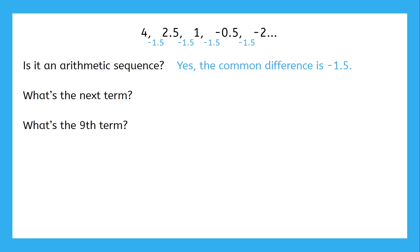Now that we know the common difference, we can find the next term. Negative 2 minus 1.5 is negative 3.5.